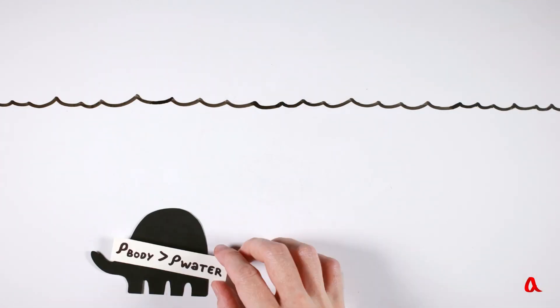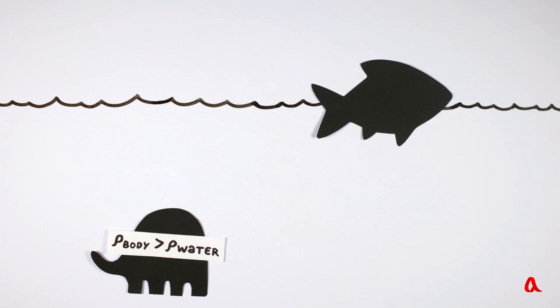If a body sinks in water, its average density is greater than the density of water. If it floats in it, its average density is lower.